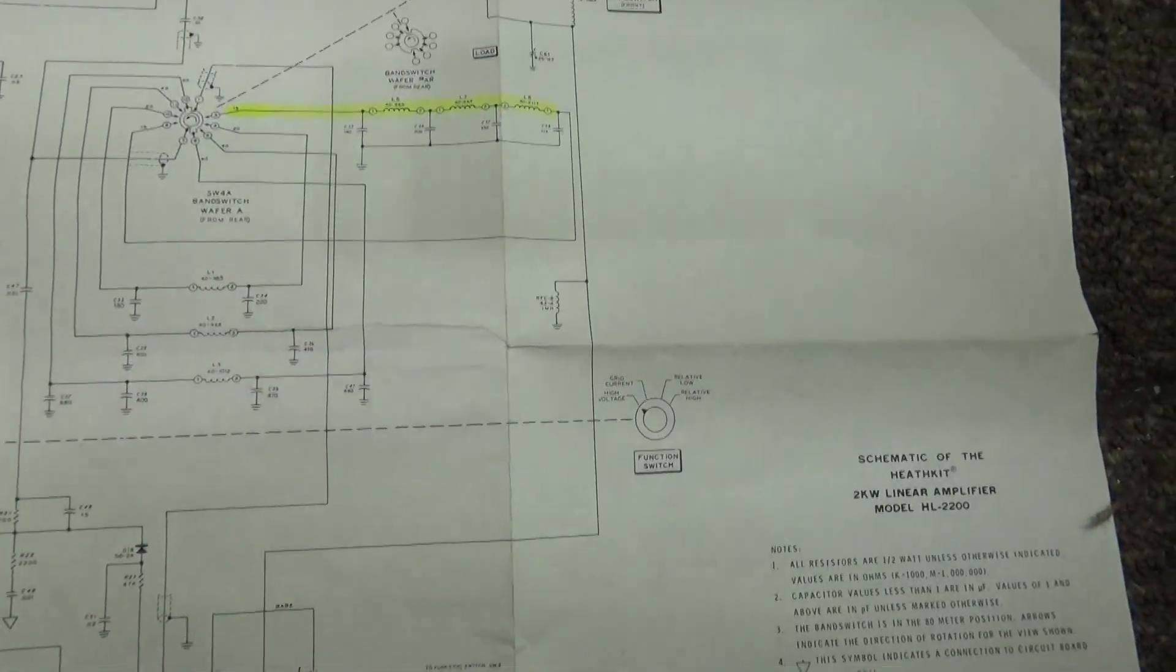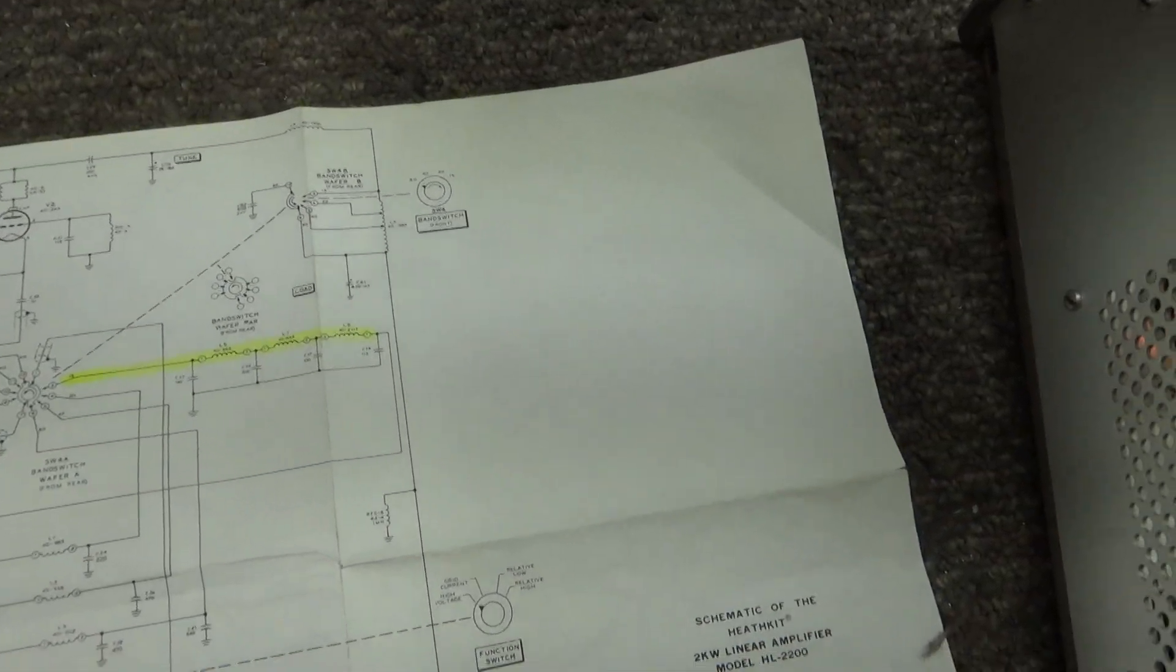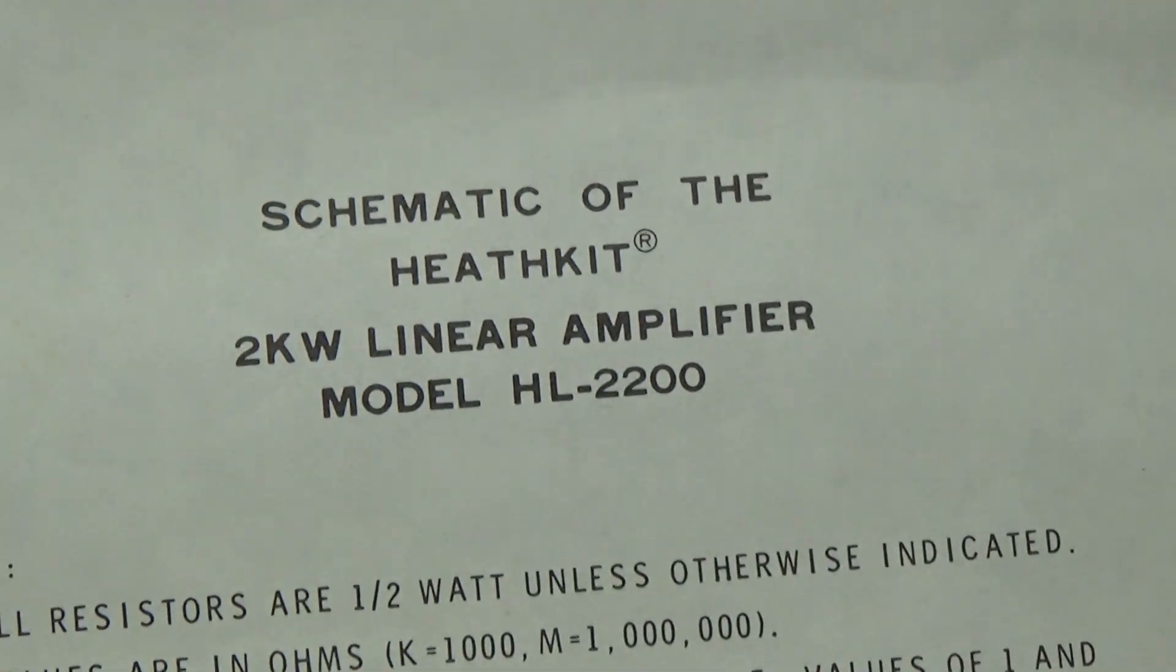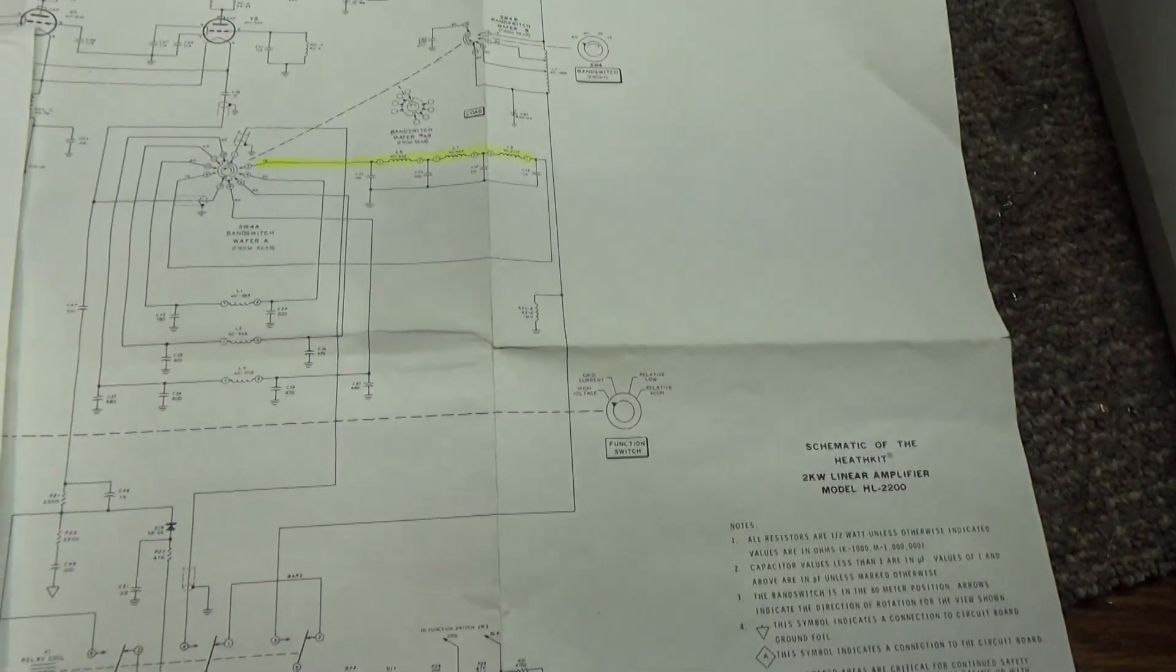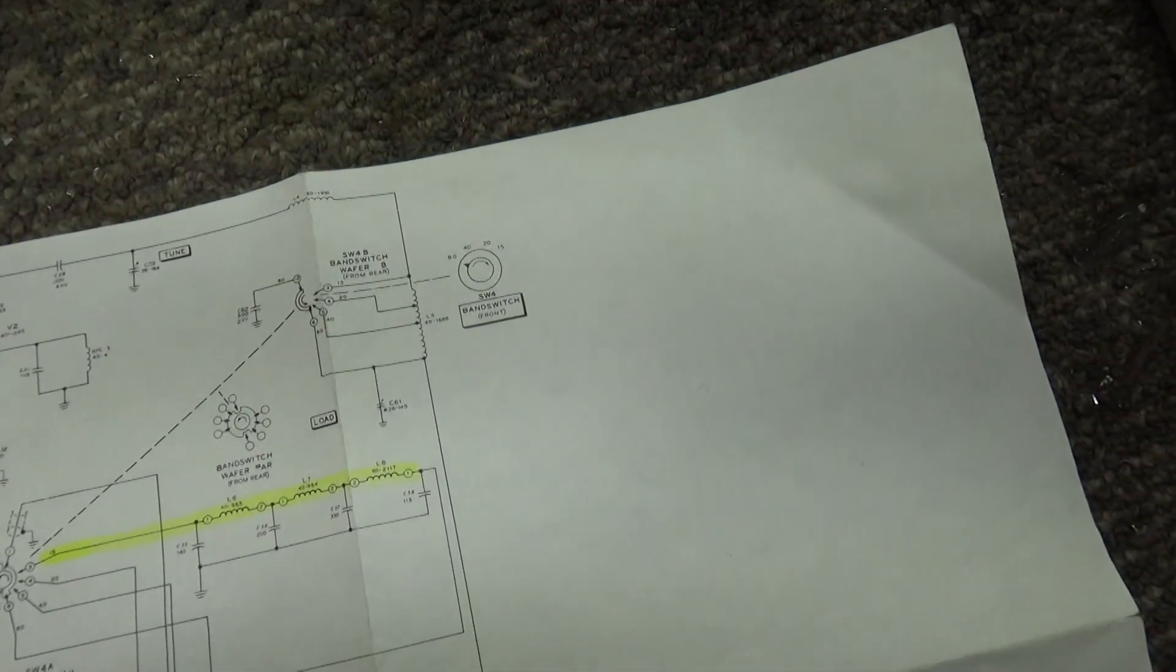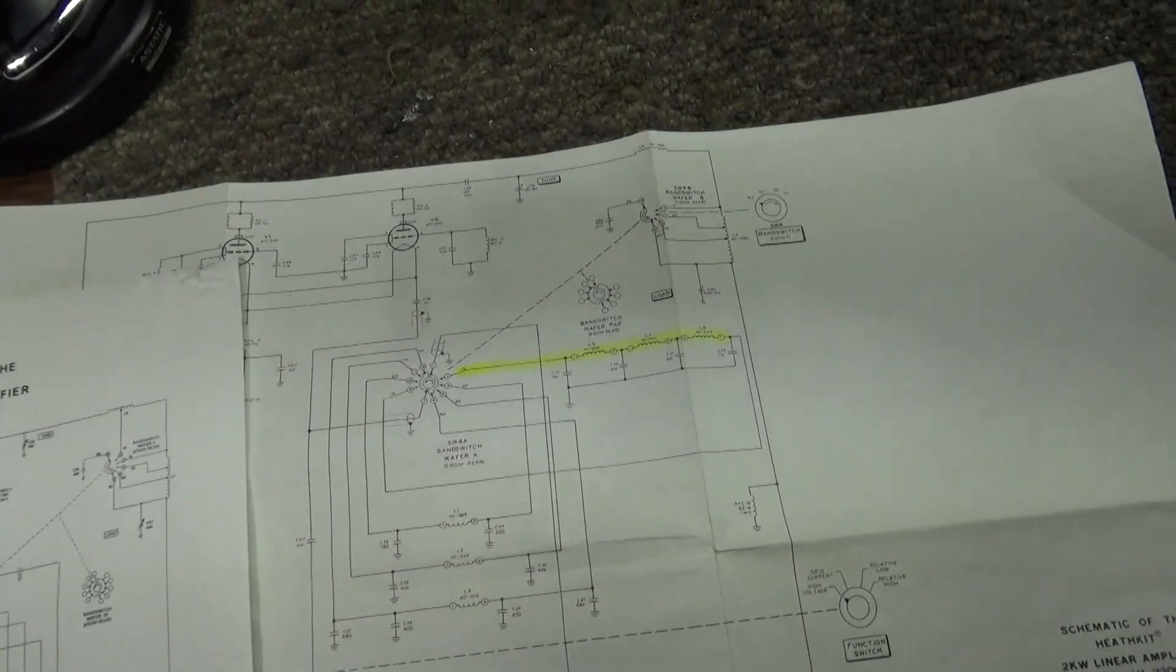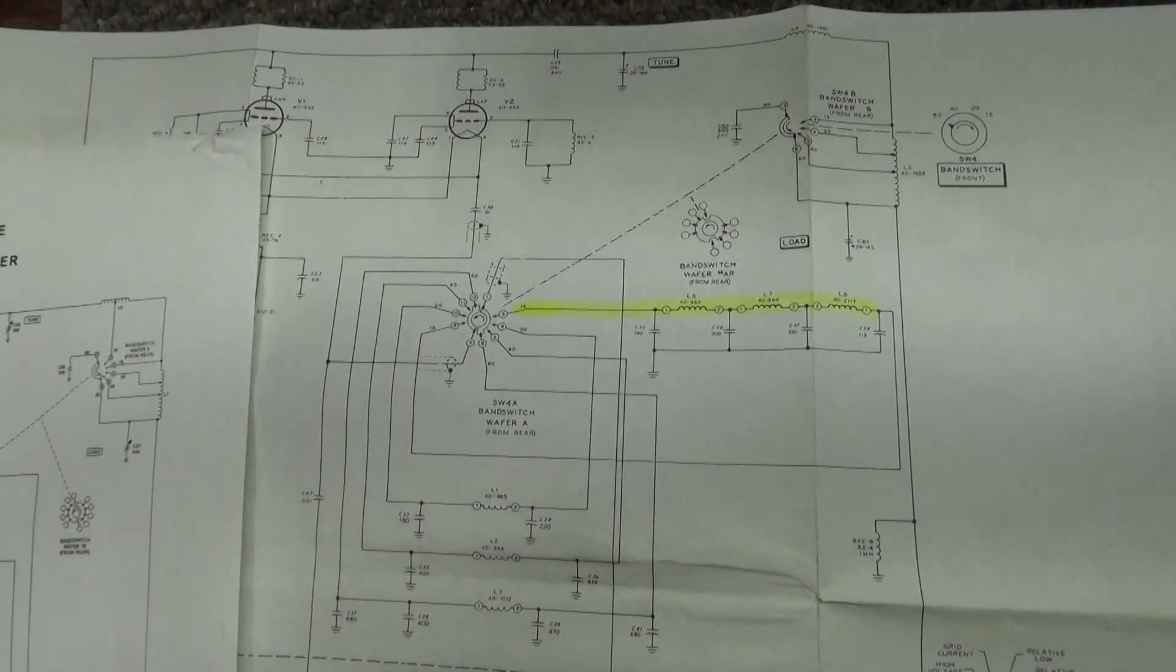The late SB220s and SB221s, and also the Heathkit HL-2200s, some of them didn't have 10 meters in them. They just had 15 through 80 meters. What they did in those is they put in a block for 11 meters on the input side. So if you try...